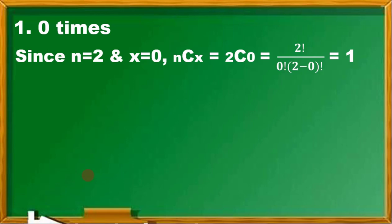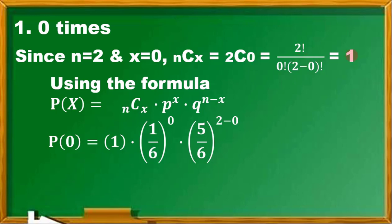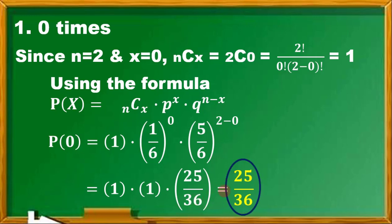P(0): we have the formula, and you can verify 2C0 in your calculator—it gives you 1. So P(0) is 1 times 1/6 raised to 0, times 5/6 raised to 2 minus 0, or simply 2. This is 1, we copy 1, this is also 1. Then 5 squared is 25, and 6 squared is 36. So the final answer is 25 over 36.